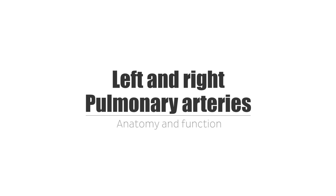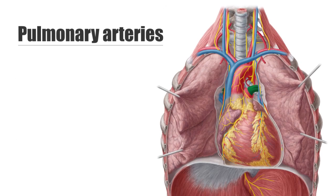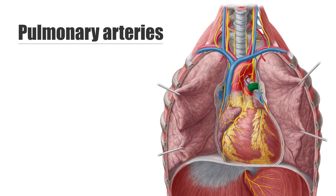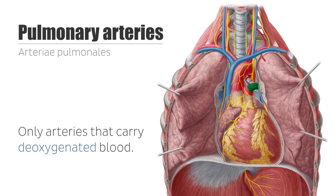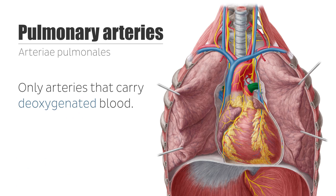Hey everyone, this is Matt from KenHub, and the focus of this tutorial is the pulmonary arteries, highlighted here in green and seen from the anterior view. The trick to understanding the pulmonary arteries is recognizing that they are the only arteries that carry deoxygenated blood.